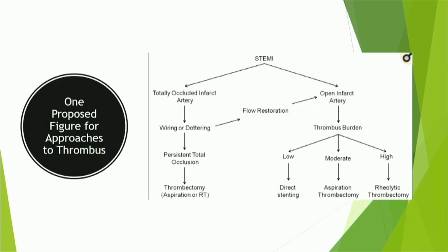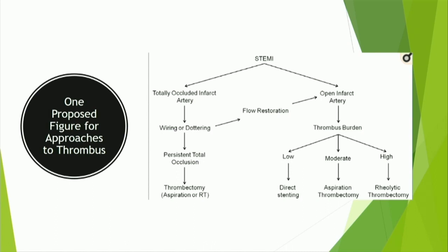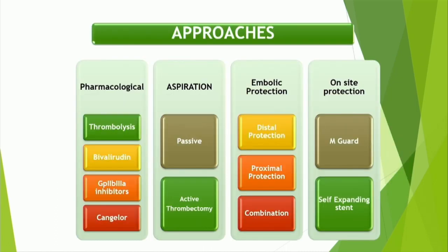Here is a proposed figure for how to approach this. If the artery is open and thrombus burden is low, do direct stenting; if moderate, aspiration; if high, rheolytic thrombectomy. But we all know this isn't really what we do, and there isn't really a validated algorithm to approach this.